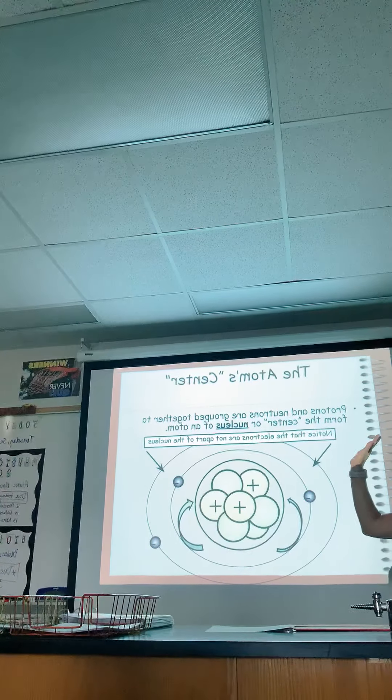Protons and neutrons are grouped together in the center — and that center is called the nucleus. So we've got protons and neutrons in the nucleus and the electrons around the nucleus, in energy levels, sub-levels, orbitals, electron shells. Two in the first shell, eight in the second.